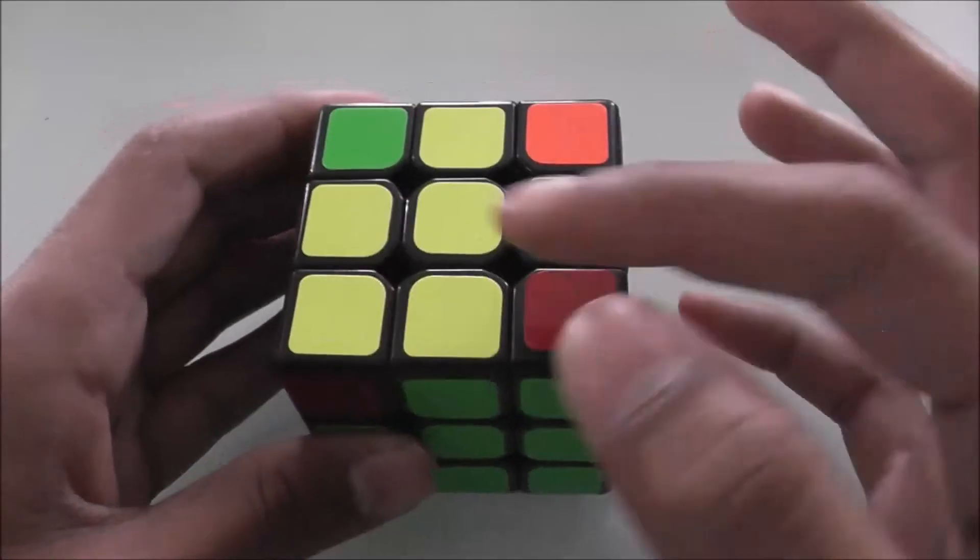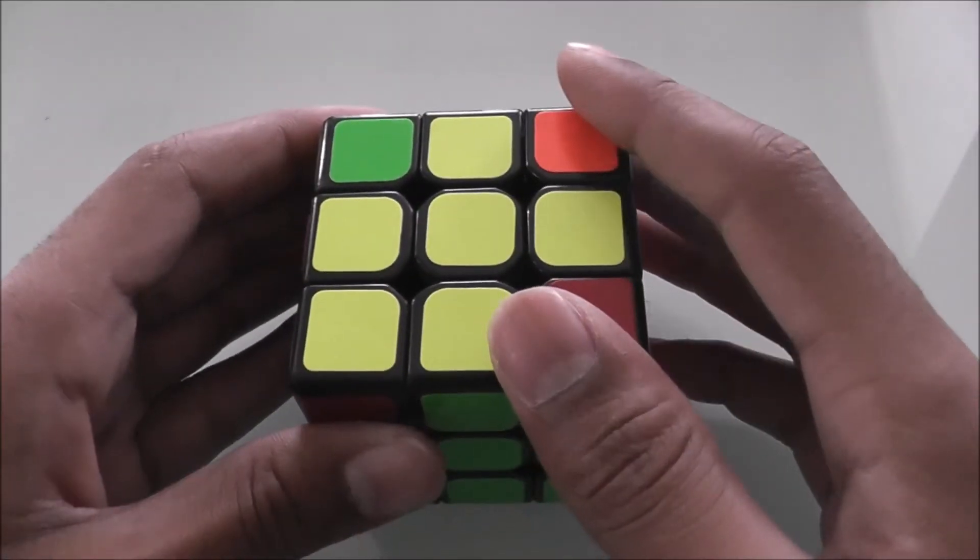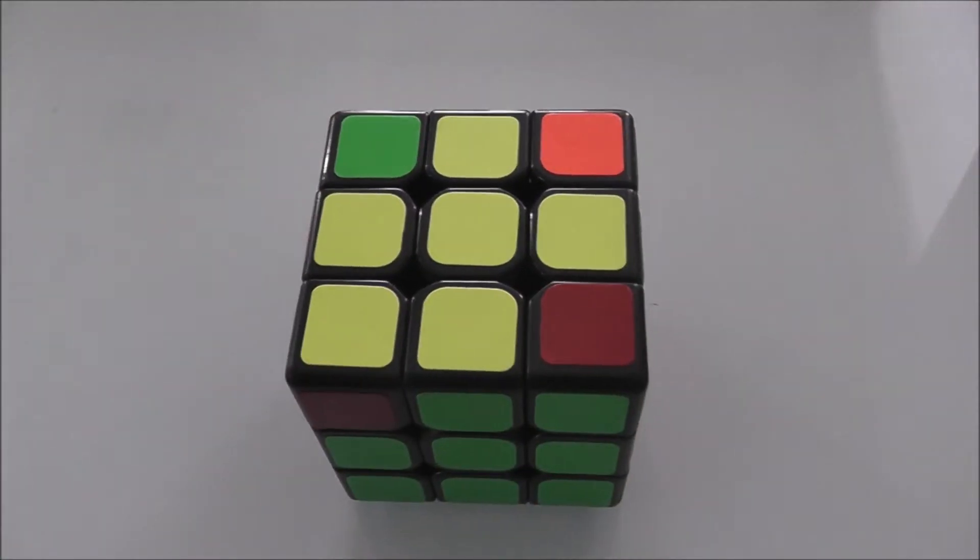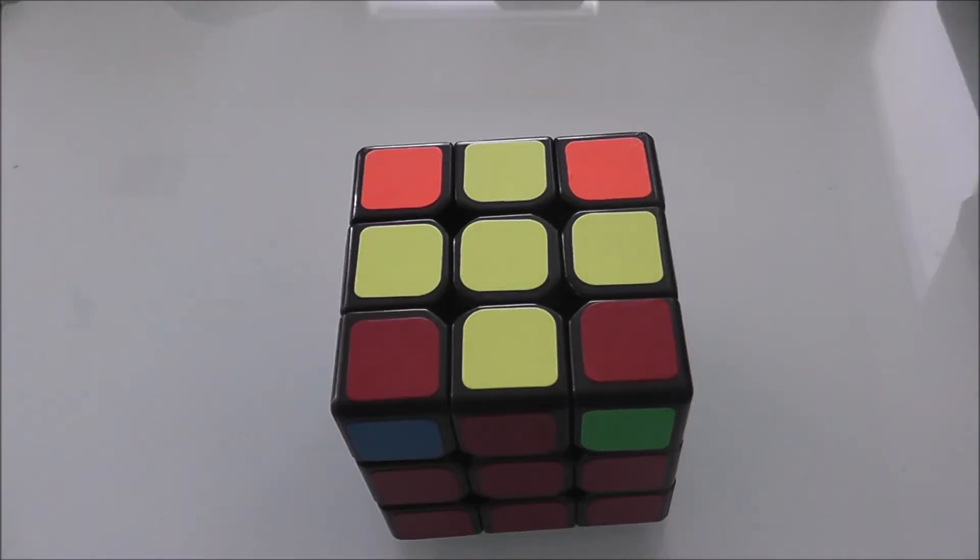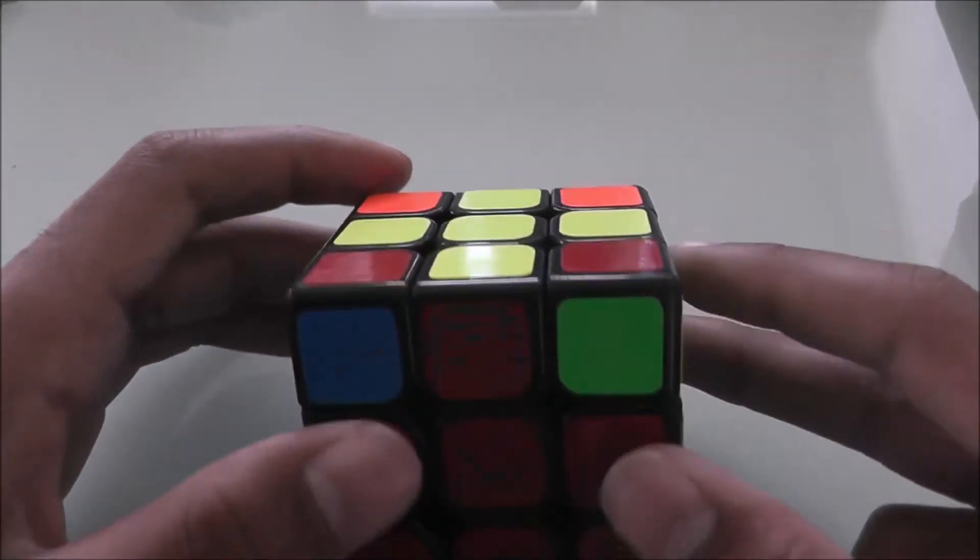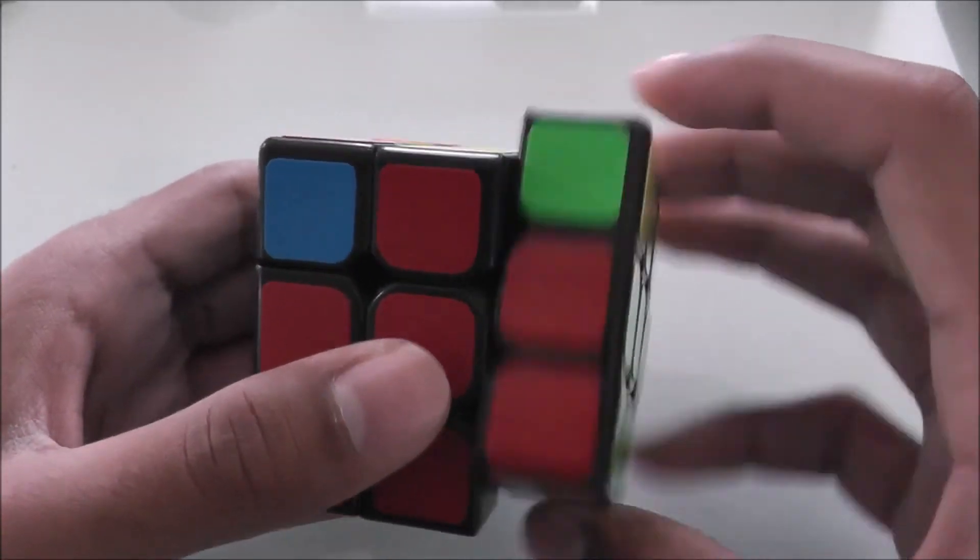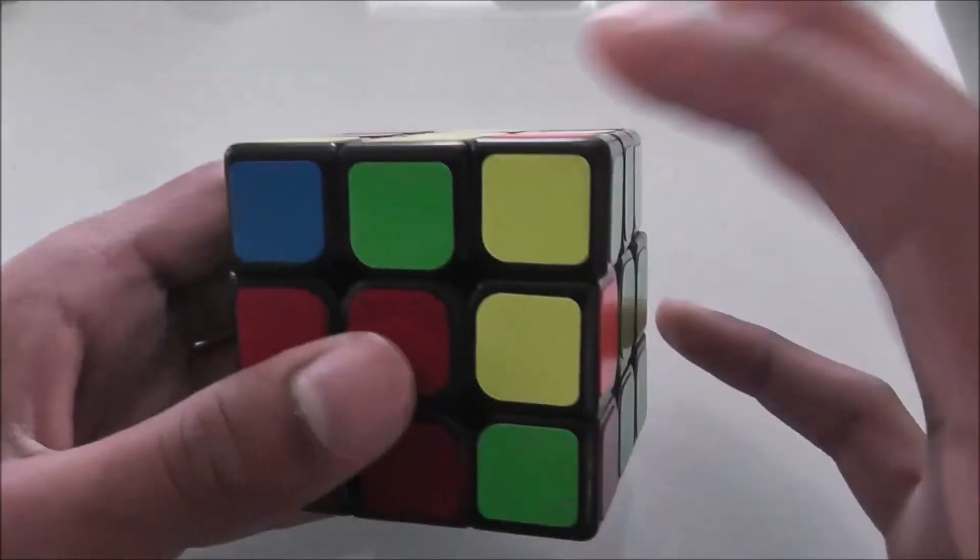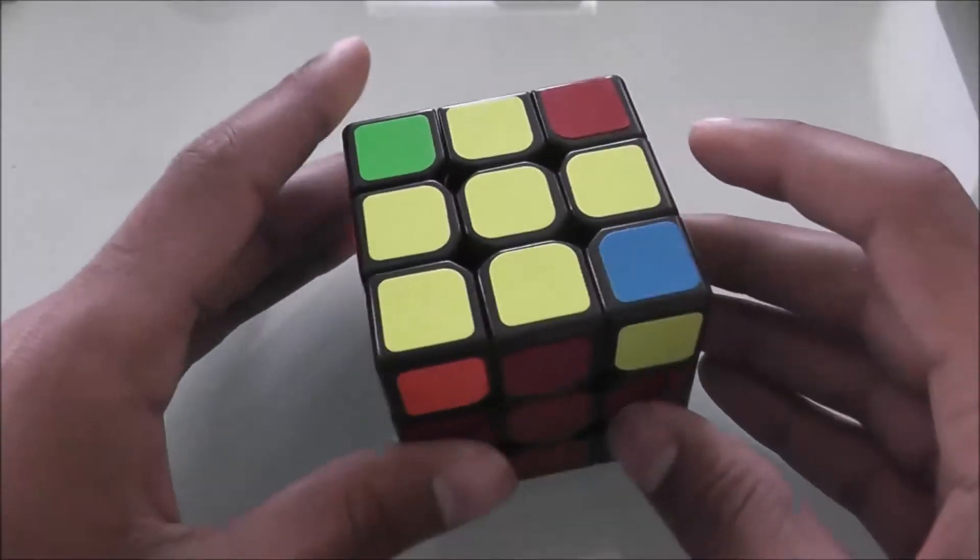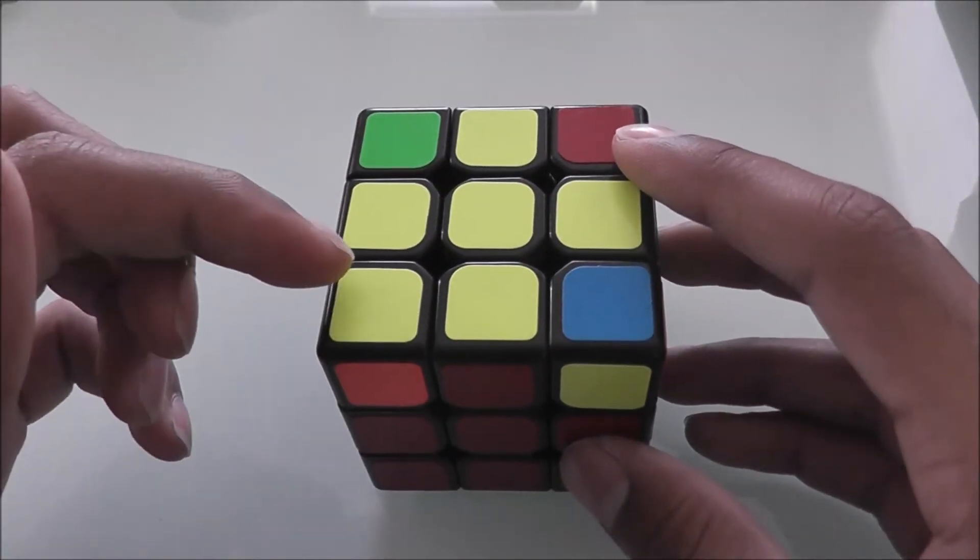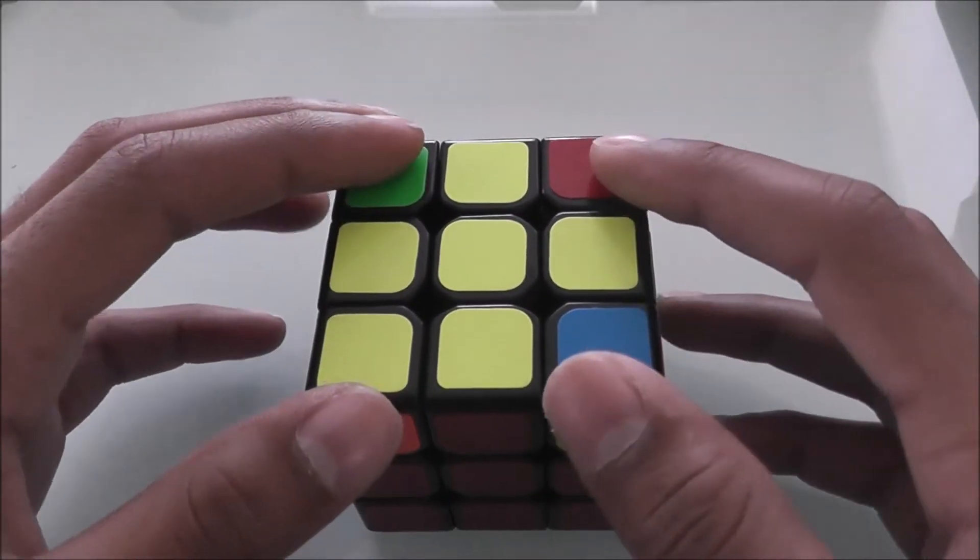If you already start out with one that is solved, you can completely ignore this step. If there are four that are unsolved, then you hold it so that no yellow is on the left, and you do the same algorithm: R U R' U R U2 R'. And as you can see, that made it so that there's one here and three that are unsolved.